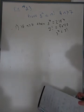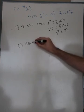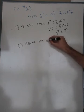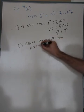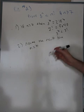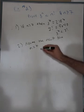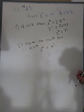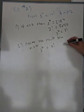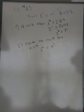Step two: we assume the result true for some n equal to k, which means we say that 3^k is less than k factorial for all k, where k is also greater than or equal to 7. This is our induction hypothesis.